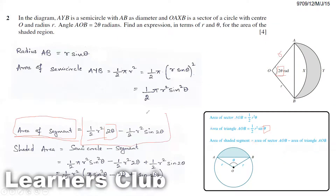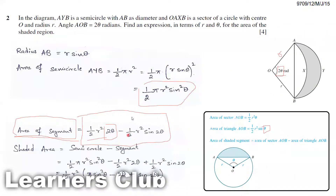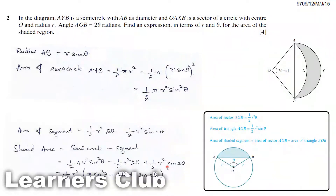Now we subtract the segment from the semicircle: ½πR²sin²θ minus [½R²(2θ) − ½R²sin(2θ)]. The double negative makes the sin 2θ term positive, giving us ½πR²sin²θ − R²θ + ½R²sin(2θ). Taking ½R² as a common factor, the final expression for the area of the shaded region is ½R²(π sin²θ − 2θ + sin 2θ). Thanks for joining us.